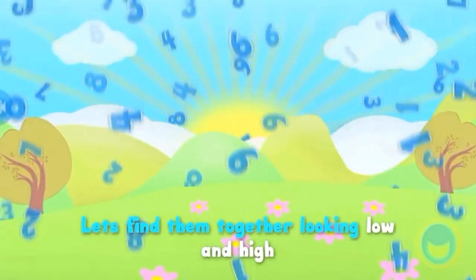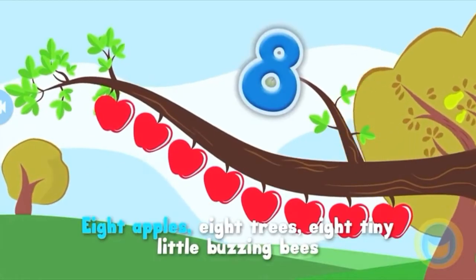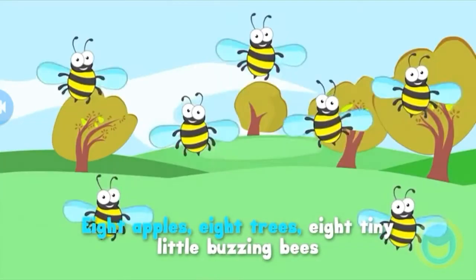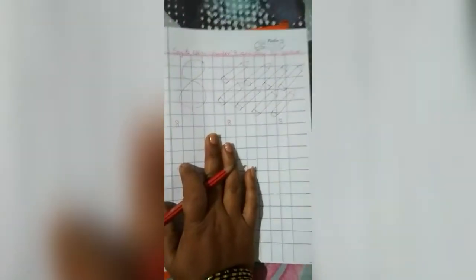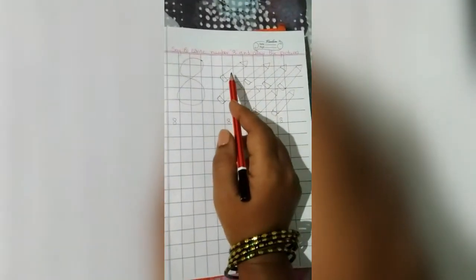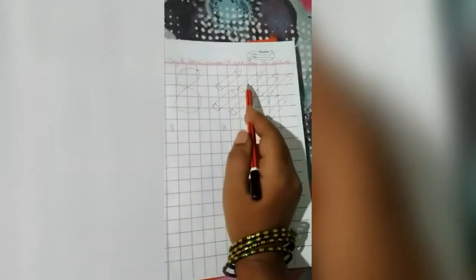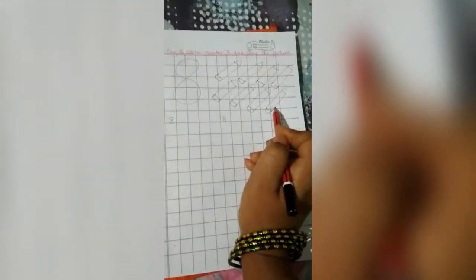Now take out your book, maths notebook children. Today we'll practice number eight in notebook. Children, see here number eight. See what are these? Pencils. How many pencils are there? Let's count children. One, two, three, four, five, six, seven, eight. How many pencils are there? Eight pencils.